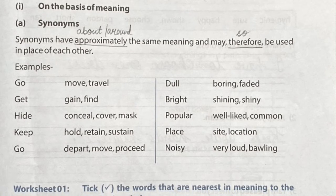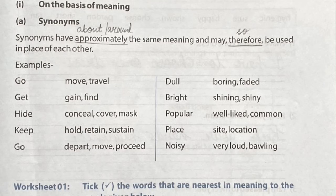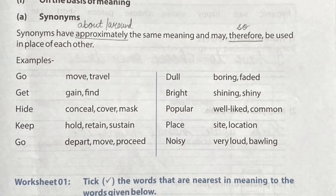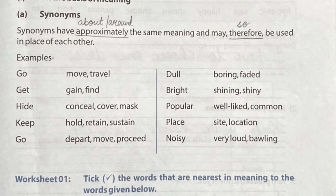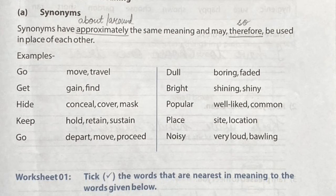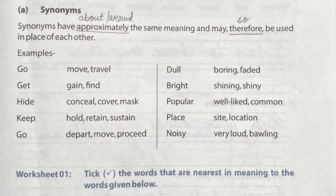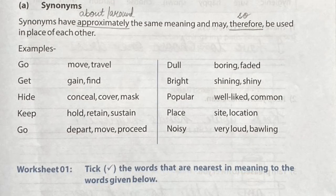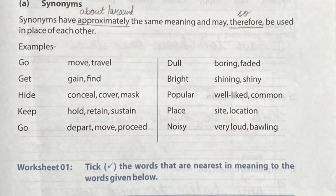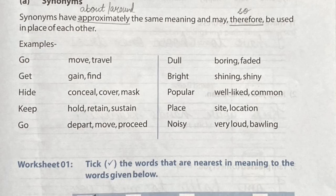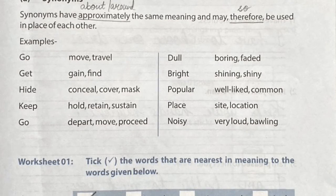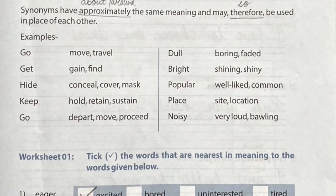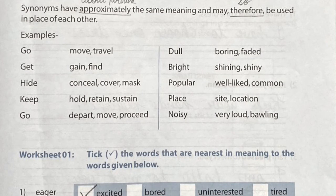For example, the synonyms of 'go' are: move, travel. The synonyms of 'get' are: gain, find. So if we do not want to use 'go', we can use 'move' or 'travel'. In place of 'get', we can use 'gain' or 'find'.